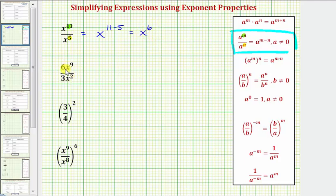Looking at the next expression, notice how we can simplify the coefficients. Six divided by three is equal to two, and then we have x to the ninth divided by x to the second, which would be x to the power of nine minus two, so this simplifies to two x to the seventh.